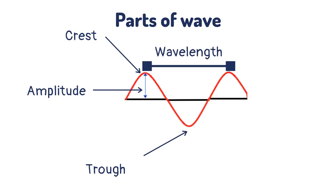The crest of the wave is the highest part of the wave, and the lowest part of the wave is called the trough. The height of the wave is called the amplitude, and the wavelength of a wave is the distance between one point on a wave and the identical point on the next wave.